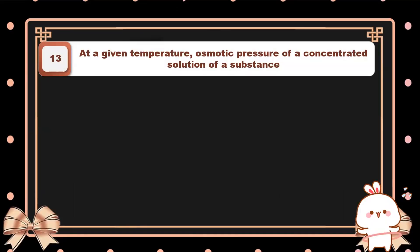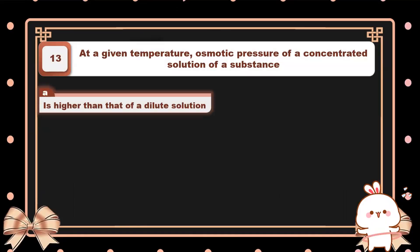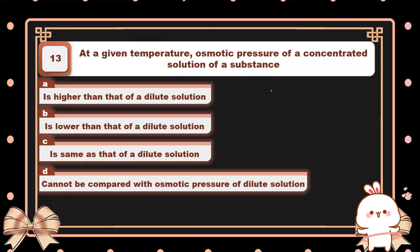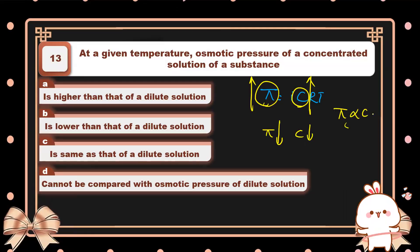Question number thirteen: at a given temperature, osmotic pressure of a concentrated solution versus a dilute solution. The formula is π = CRT (or iCRT). More concentration means more osmotic pressure; less concentration means less osmotic pressure — osmotic pressure is directly proportional to concentration. That is why for higher concentration osmotic pressure is more than for a dilute solution. These are the questions from the Solutions chapter. Thank you so much for watching this video.